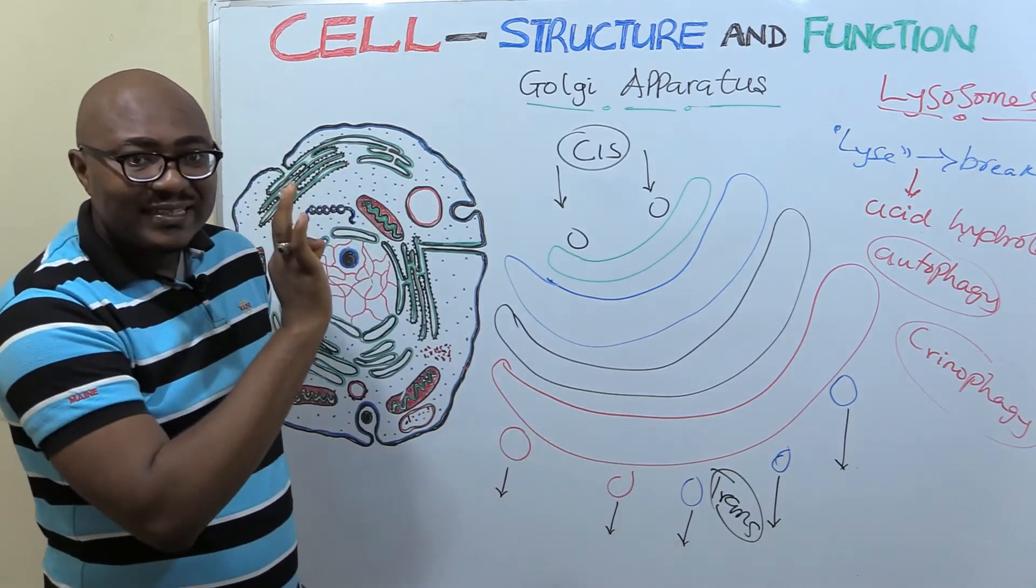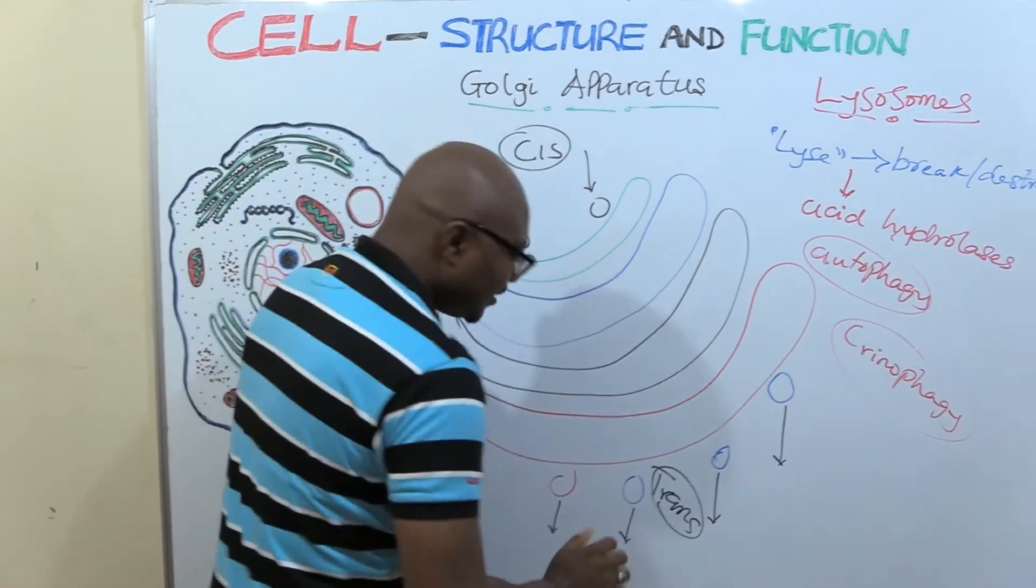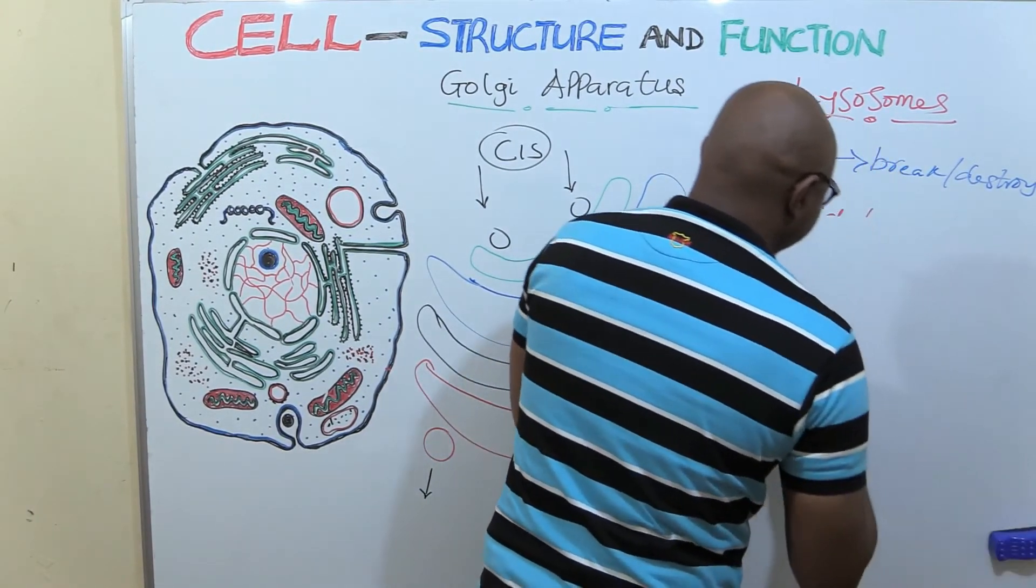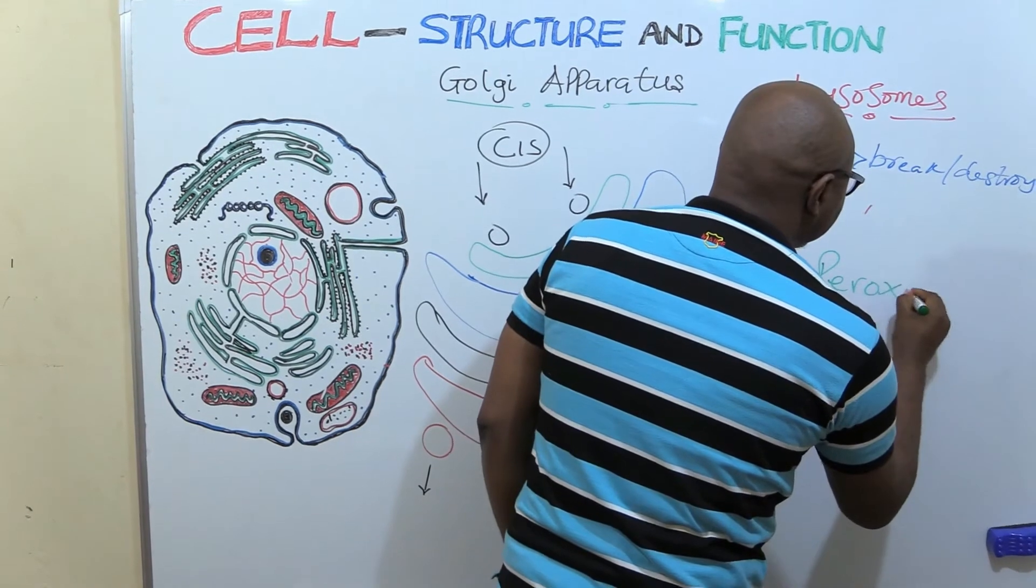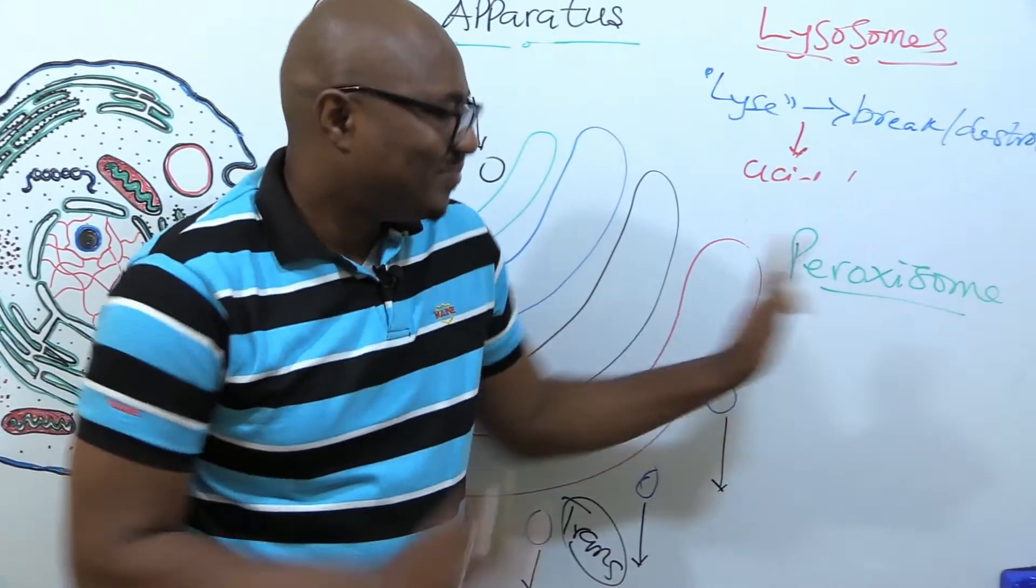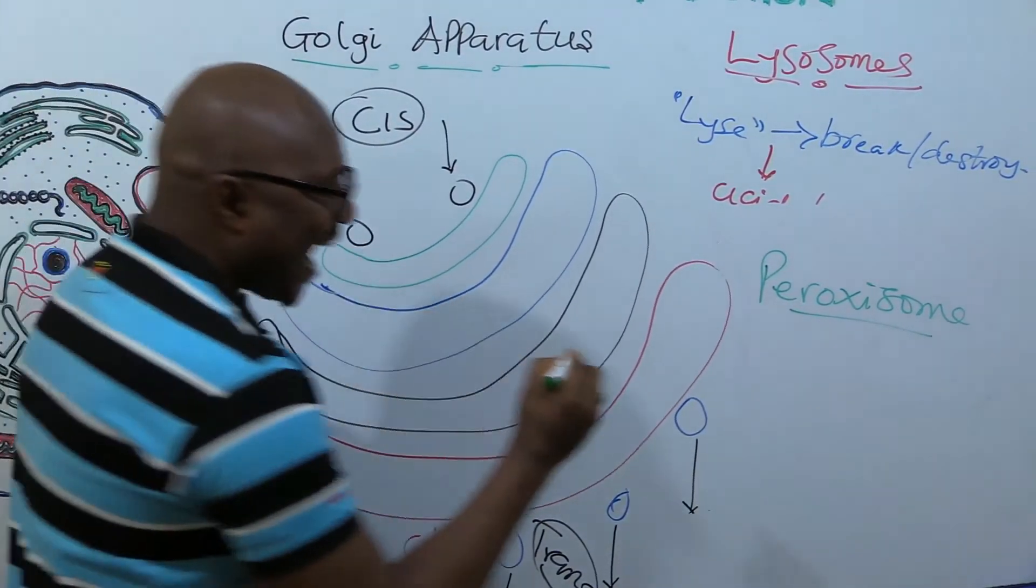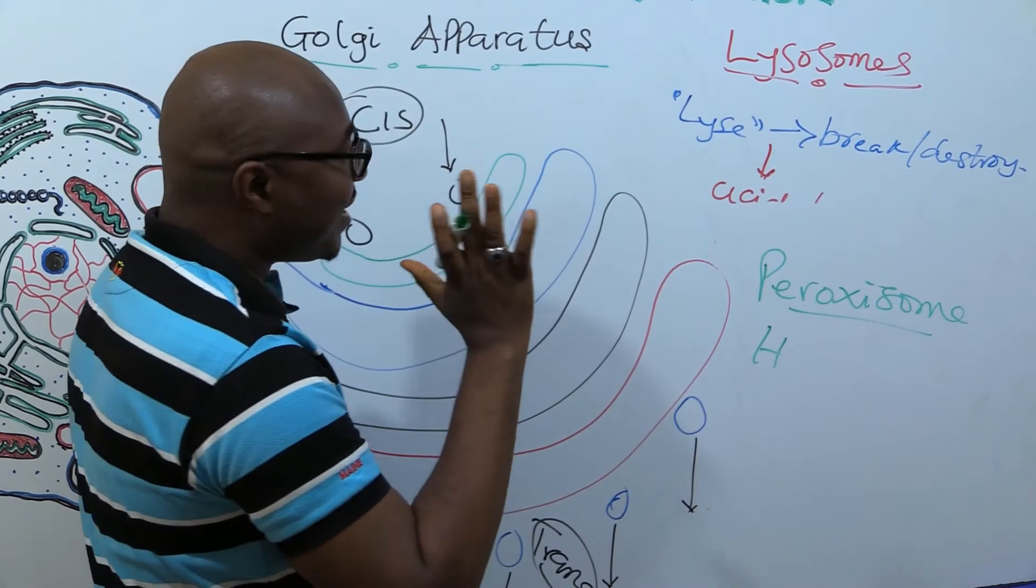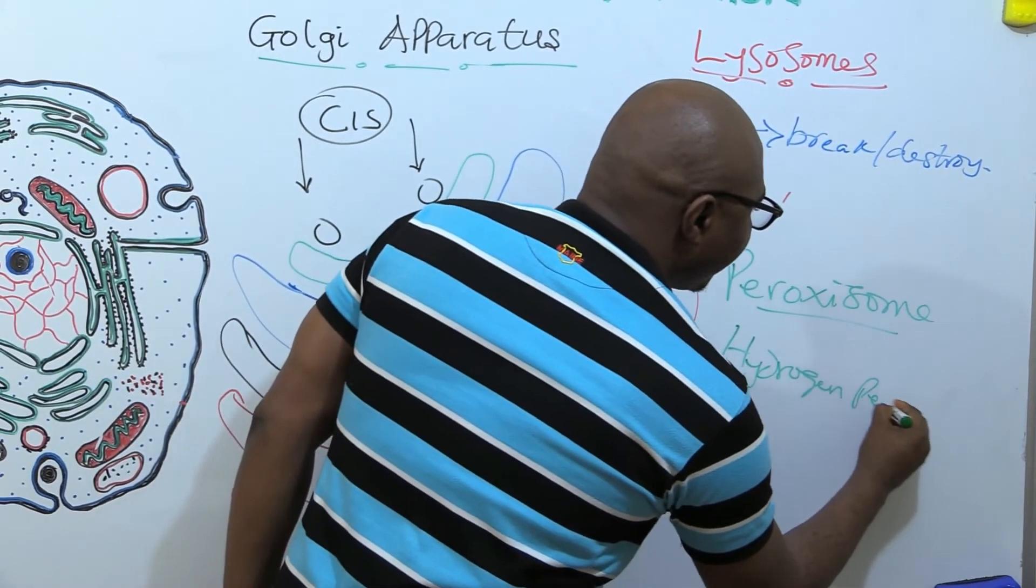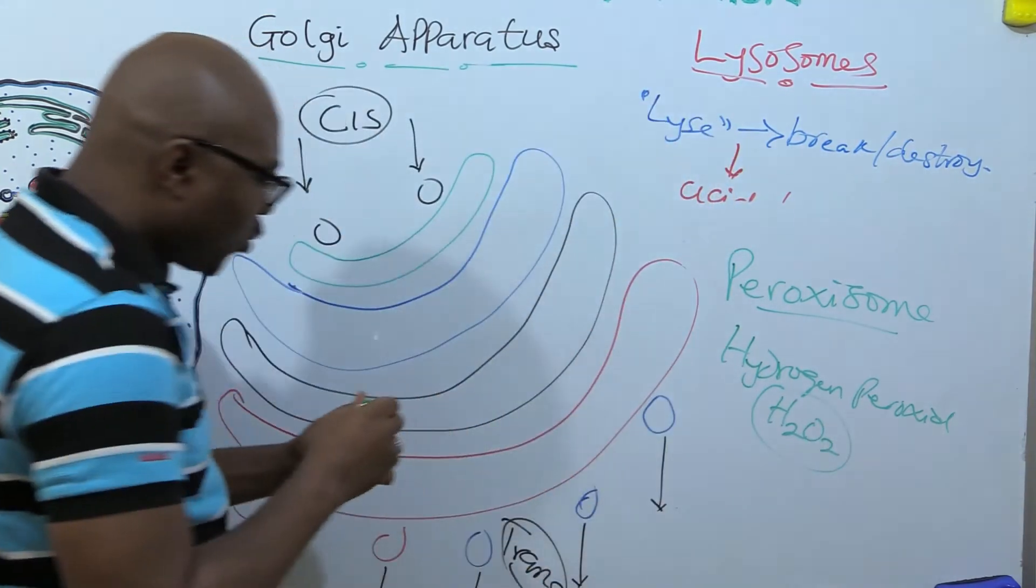Now there's another cell organelle that performs something similar with the lysosome, but there is a difference. That one is known as peroxisome. So you see, soma means body. Peroxisome. It has a relationship with hydrogen peroxide. So you always use that to remember the function. Peroxisome. Hydrogen peroxide.